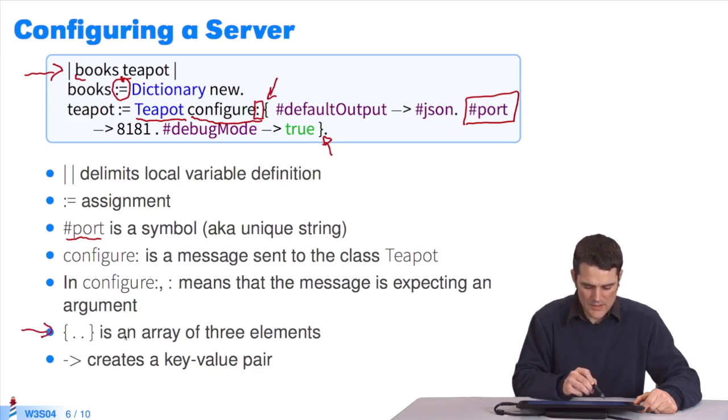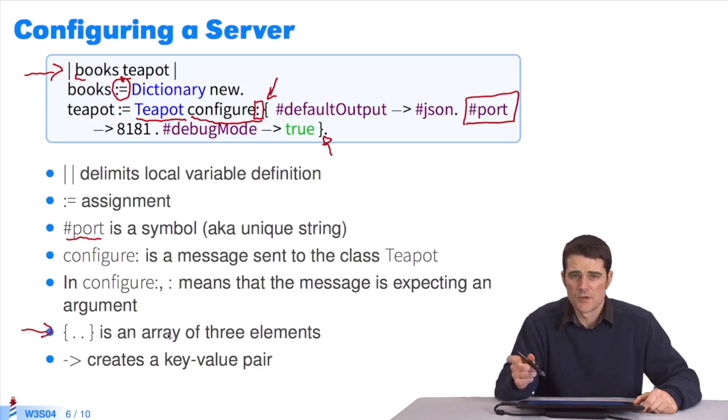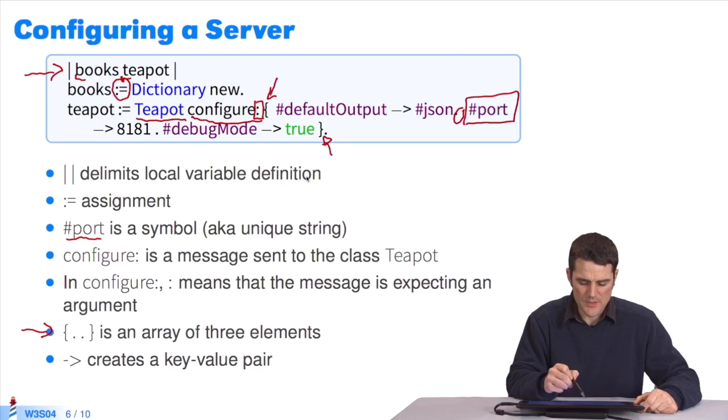All this between braces. Each expression separated by a period will be evaluated. And we'll build an array with the results of each expression. There's only one argument in the method configure. And inside this dynamic array between braces, you will use an arrow to build association objects. So it's one key, one value.